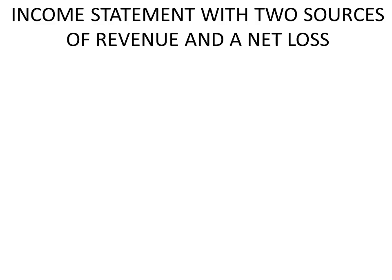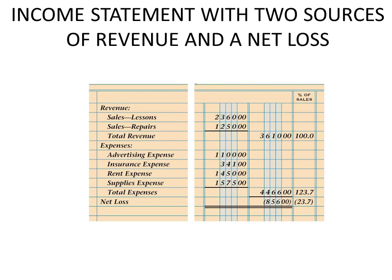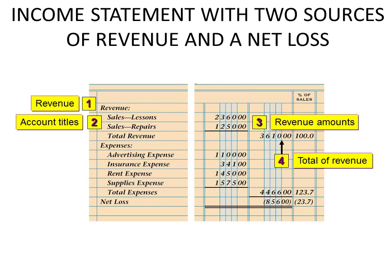If we have an income statement with two sources of revenue, we would use the second column, listing each category — for example, sales lessons and sales repairs — and then total revenue would go in that third column. The total column is in the third column; subtotals go in the second column. In this case, our revenues do exceed our expenses by $856. In accounting we don't use negatives — we use parentheses — so that's a negative $856 and a negative 23.7% of sales.